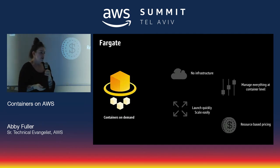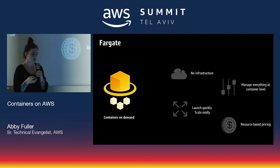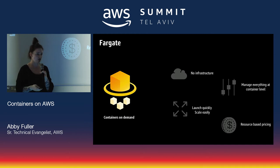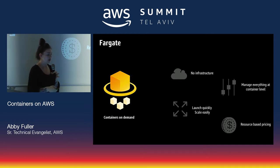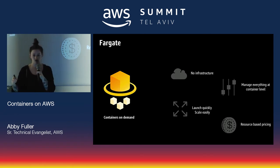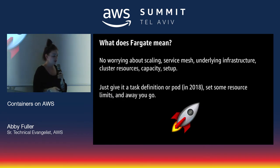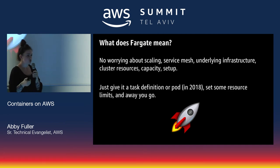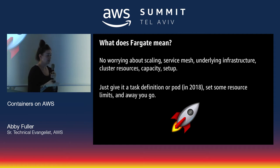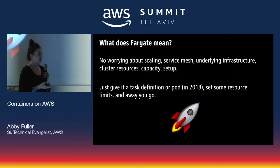Then you have Fargate — not its own service, but an underlying technology. It takes the cluster layer out of working with ECS, so you manage everything at the container level: your task definition and container definition. All of the underlying cluster infrastructure you no longer manage. Coming soon in 2018, you can do the same thing for EKS, with a pod as your definition rather than a task definition. In practice, this means you don't worry about choosing the right AMI, the right instance type, when and how to scale, or capacity planning.